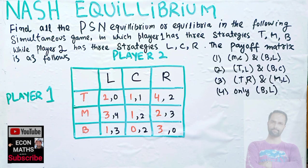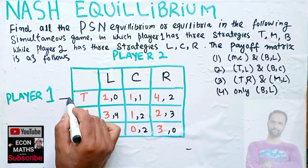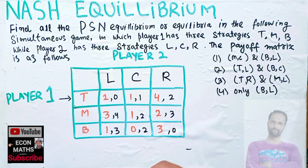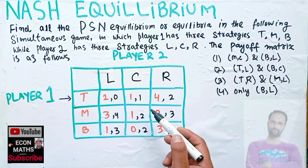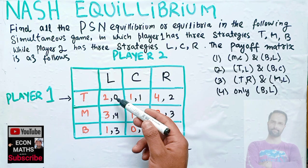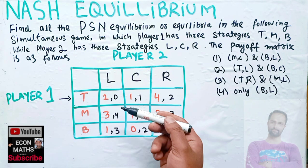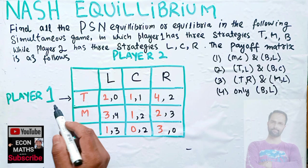Let's try to figure out the Nash equilibrium here. The first numbers in each cell, shown in red, represent the payoff for player one, and the second numbers represent the payoff for player two. So let us say player one plays strategy T.